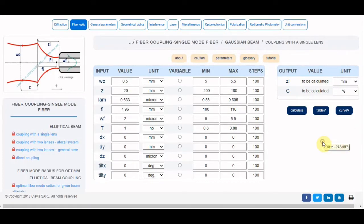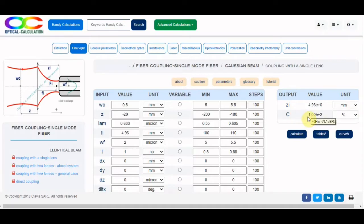And T is the system transmission, including the Fresnel reflection at the fiber entrance. Let's take it to one for the moment. The other parameters are related to misalignments. We only consider a perfect alignment where the fiber entrance facet is perfectly coinciding with the emerging beam waist. The coupling ratio is 100% as expected.